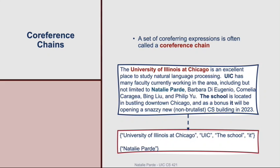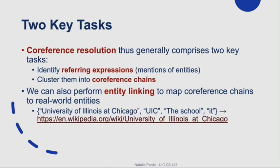If we further analyzed this sample text, we could also build additional co-reference chains for things like Chicago or CS building. At its core, co-reference resolution comprises two main tasks: first, identify all the different entity mentions or referring expressions in the text; then cluster those referring expressions into co-reference chains that all refer to the same entity. Some systems take things a step further and perform entity linking, which maps co-reference chains to real-world entities using external knowledge sources like Wikipedia.